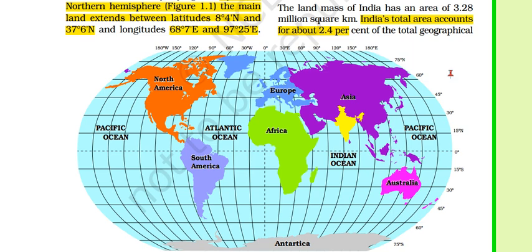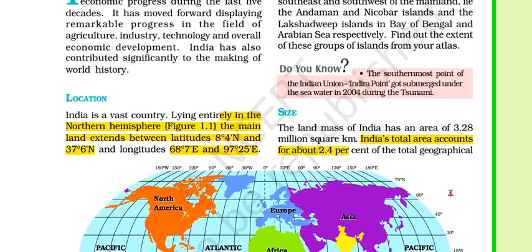After that, Kashmir lies at 37 degrees 6 minutes north. Now for the longitudinal stretch — this is 68 degrees 7 minutes east and 97 degrees 25 minutes east. So this is our horizontal and vertical stretch.